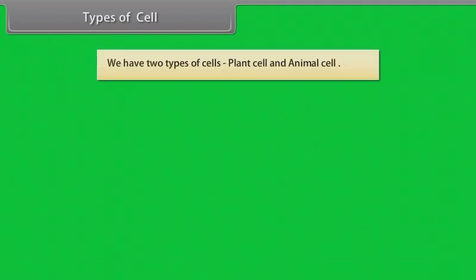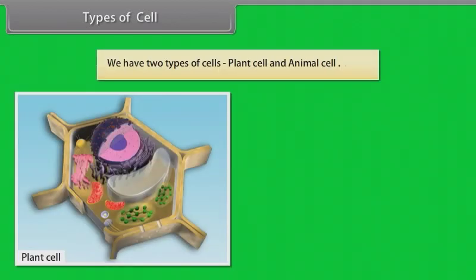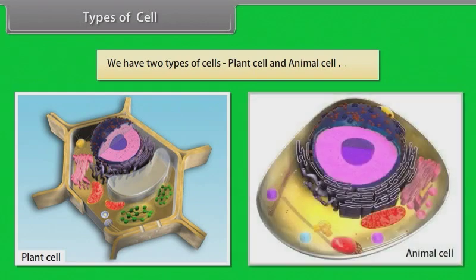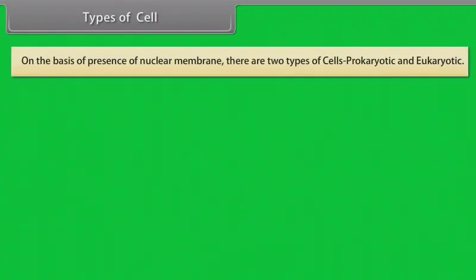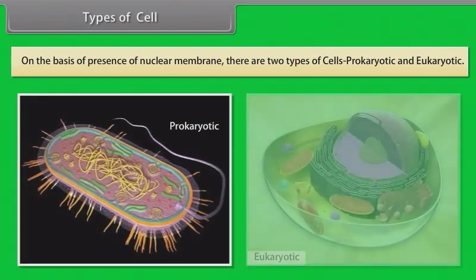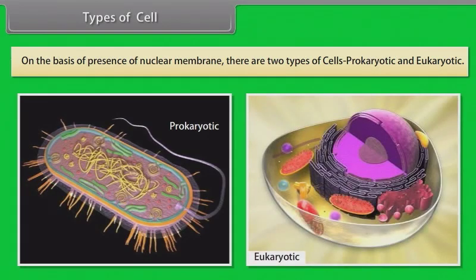There are two types of cells: plant cell and animal cell. On the basis of presence of nuclear membrane, there are two types of cells: prokaryotic and eukaryotic.